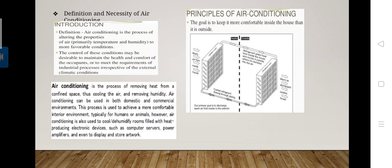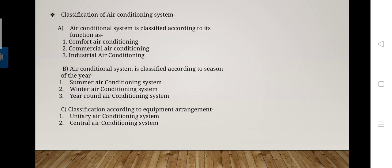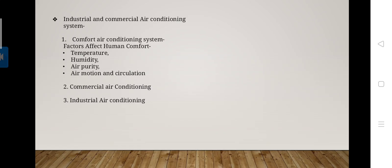Now we see the classification of the air conditioning system. Air conditioning is classified according to the following types. First, it is classified according to its function — that is, comfort air conditioning, commercial air conditioning, and industrial air conditioning. Second, according to the season of the year — that is, summer air conditioning, winter air conditioning, and year-round air conditioning system. Third, classification according to equipment arrangement — that is, unitary air conditioning system and central air conditioning system.